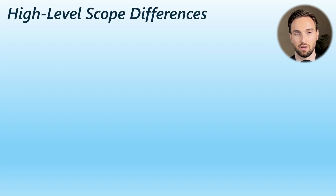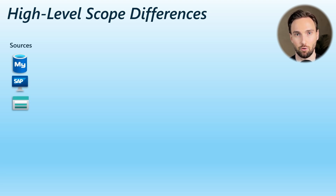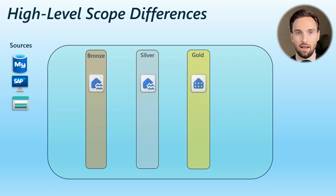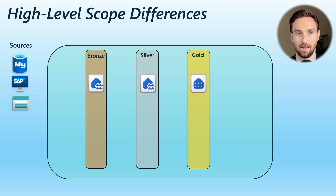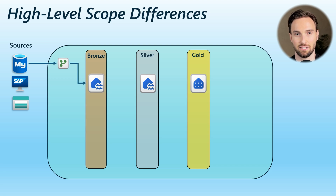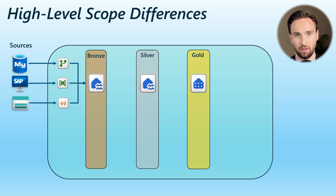Let's highlight the key differences using an architectural diagram. Imagine we have a MySQL database, SAP, and Azure Blob Storage as our data sources. On the Fabric side, we have a medallion architecture with a Lakehouse as our bronze and silver layer data store, and a Data Warehouse as our gold layer. We can use Data Flows to ingest data from MySQL to the bronze layer, Data Pipelines to fetch SAP data to the Lakehouse, and a shortcut for Azure Blob Storage using data virtualization.